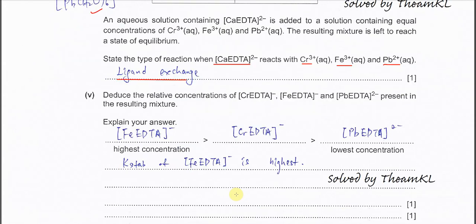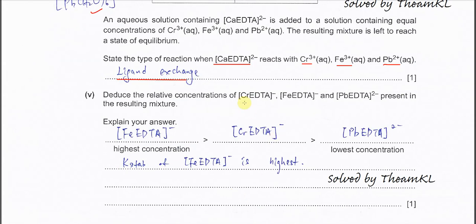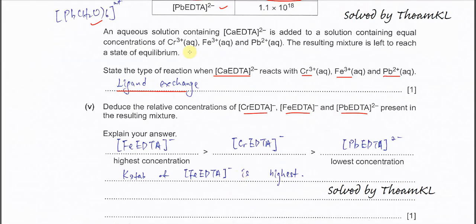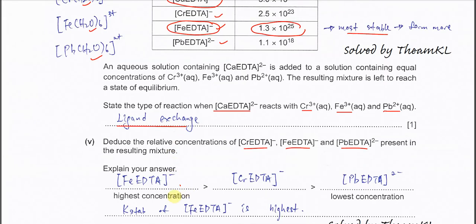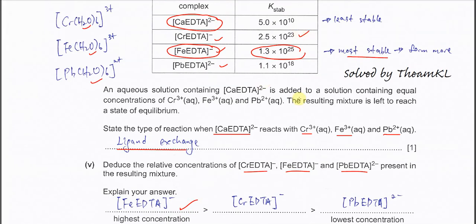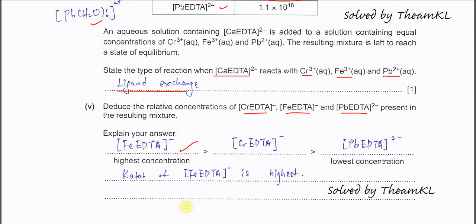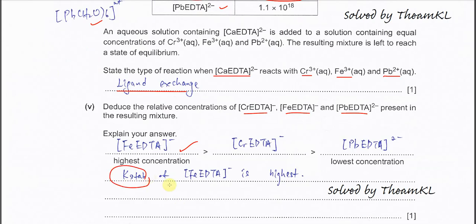Deduce the relative concentrations of the chromium–EDTA, iron–EDTA, and lead–EDTA complexes. Based on the Kstab values: iron–EDTA has the highest concentration — more than the others — followed by chromium–EDTA in second place, and lead–EDTA has the lowest concentration. Just explain using the Kstab values: the Kstab of iron–EDTA is the highest.